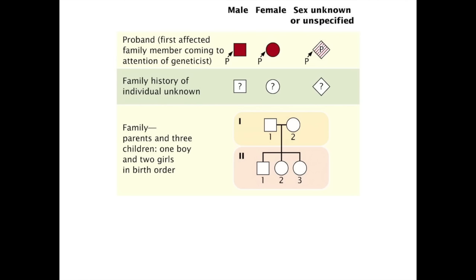A deceased individual in a pedigree is marked with a slash. The proband, which is the first affected family member that comes to the attention of the researcher, is marked with an arrow and the letter P. For individuals in a pedigree that are unknown, a question mark is used. This is an example of a family — parents, male and female, that have three children: one boy and two girls, usually written in birth order. The lines shown connect them as a family.